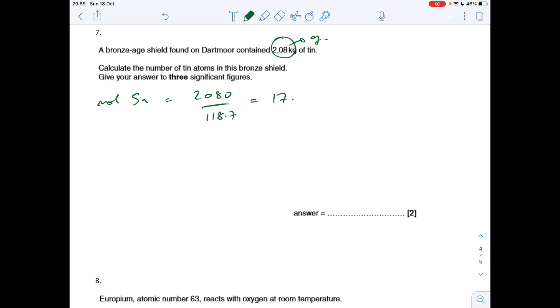The number of atoms is moles times Avogadro's number, 6.02 times 10 to the 23. That comes out at 1.05 times 10 to the 25, to three significant figures.